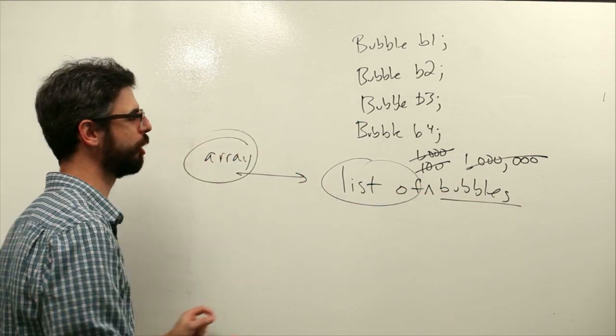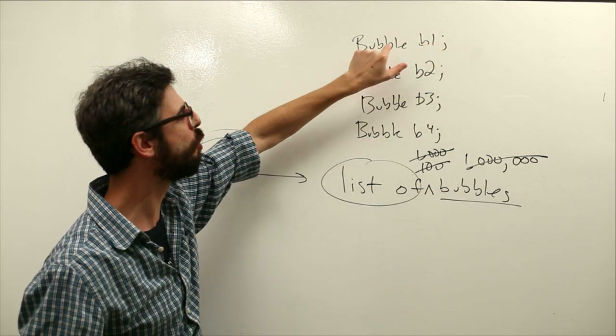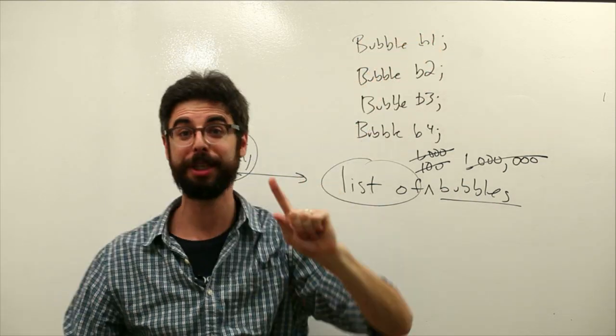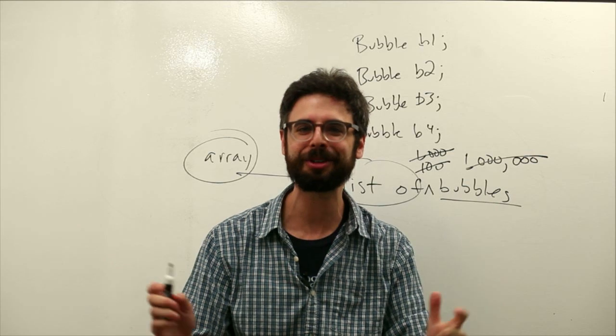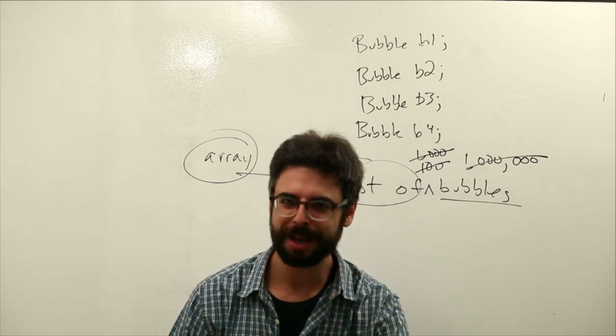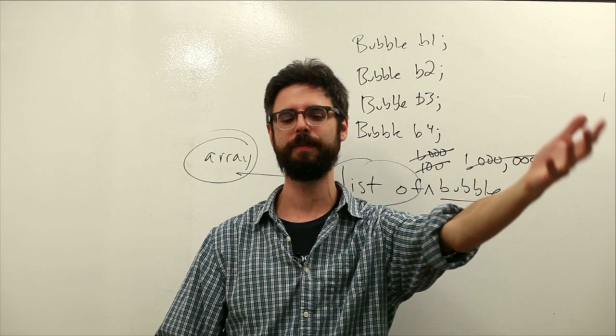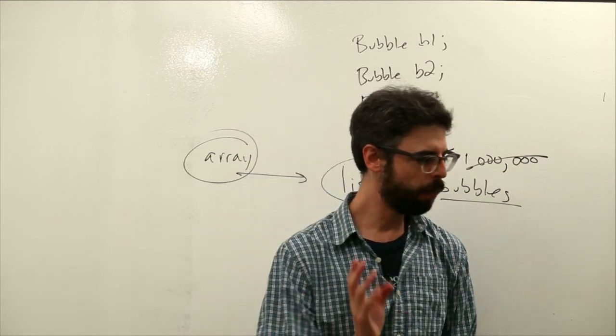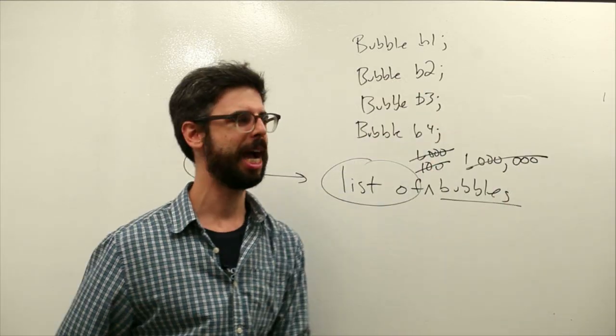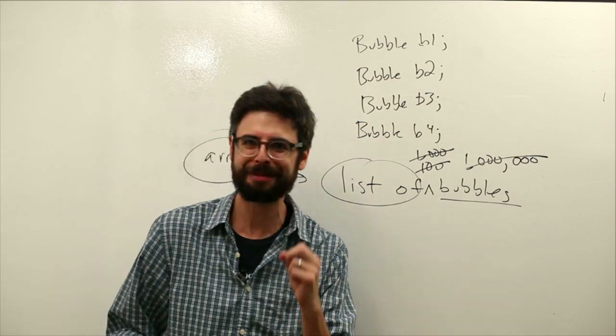An array is a data structure just like this is a data structure for a single bubble object b1. An array is a data structure that allows us to say I want to have a list of n number of bubbles. We see why we need one. That's pretty obvious.